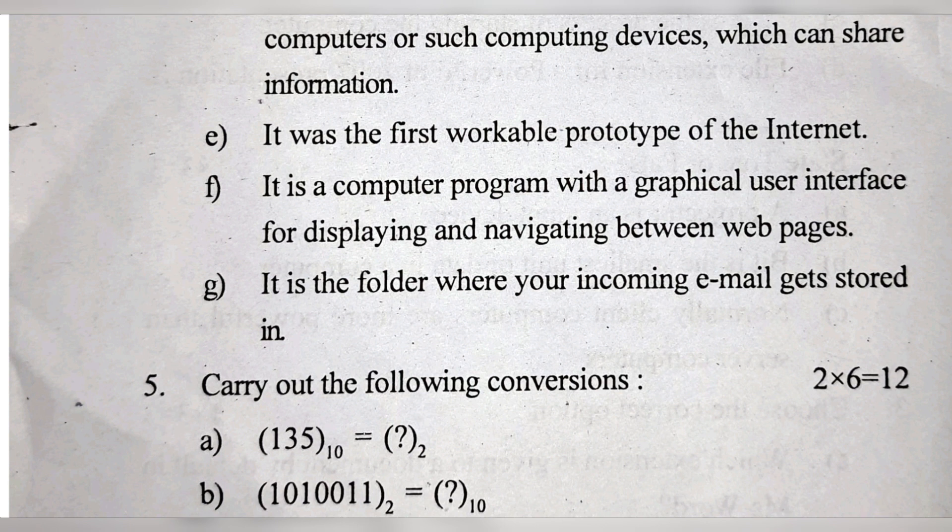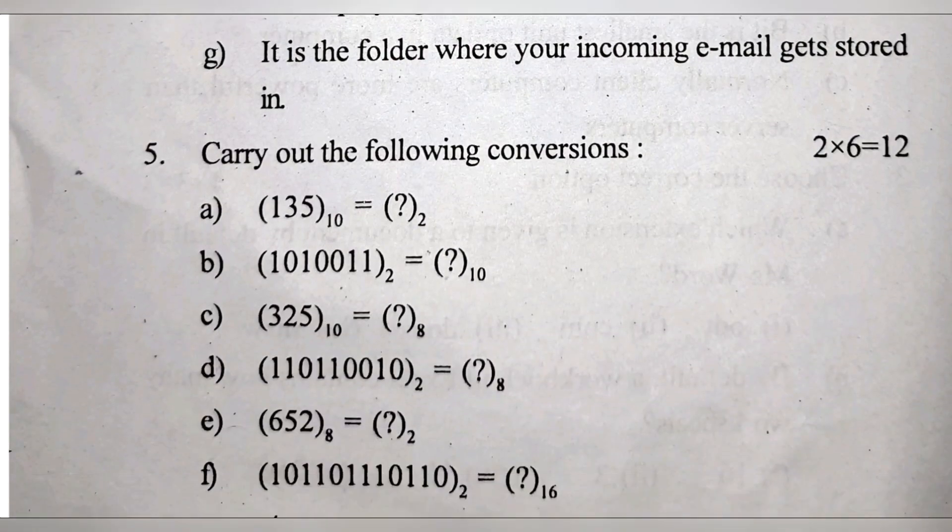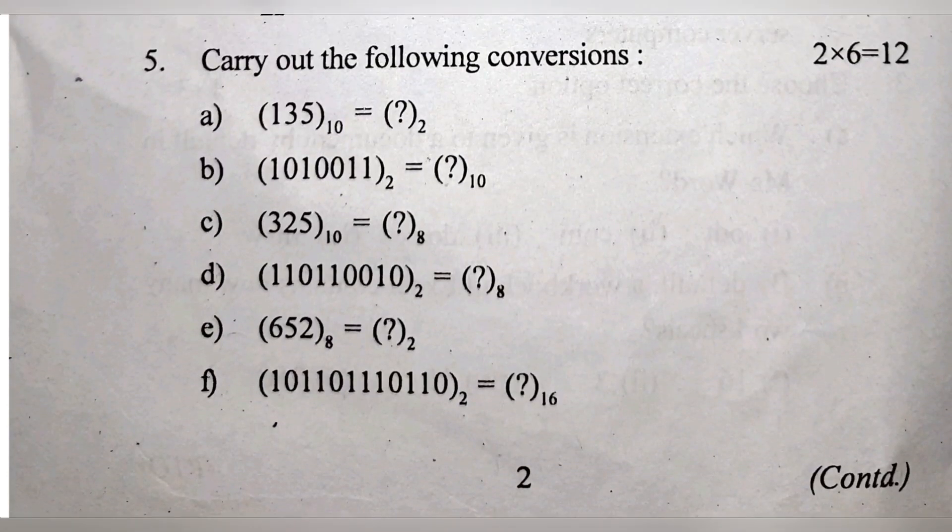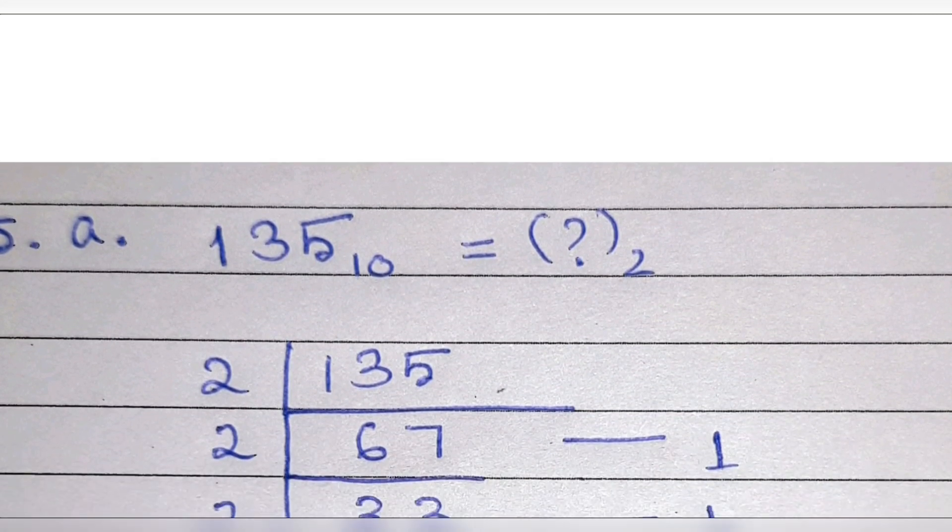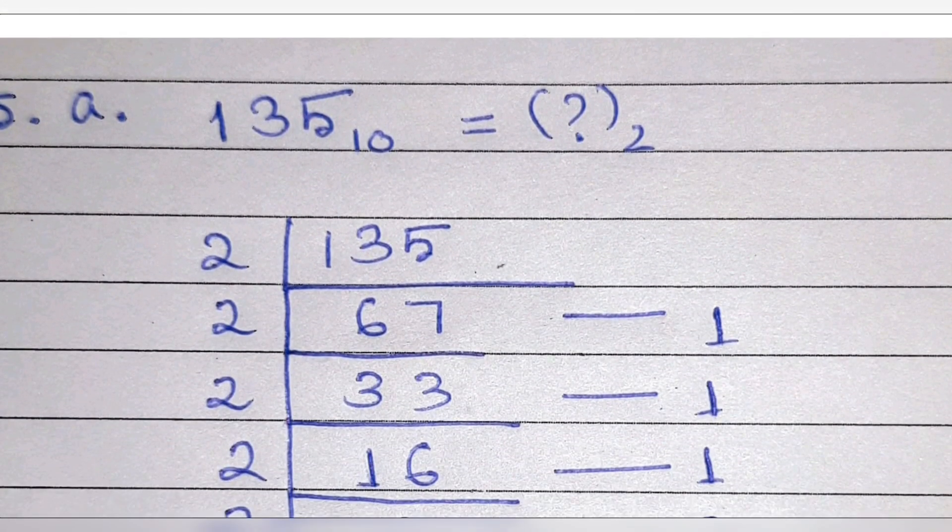In this folder your incoming email gets stored - correct answer is inbox. Now these are some number conversions: decimal to binary, binary to decimal, decimal to octal, binary to octal, octal to binary, and binary to hexadecimal. Here are the solutions. First this one is decimal to binary.